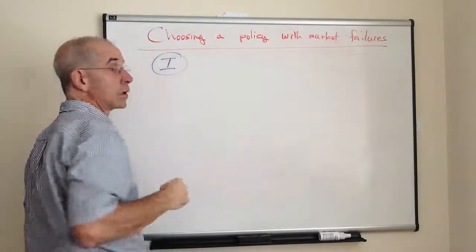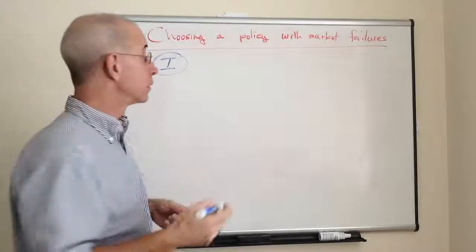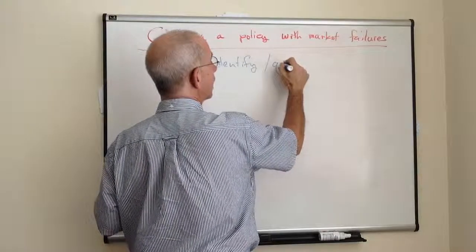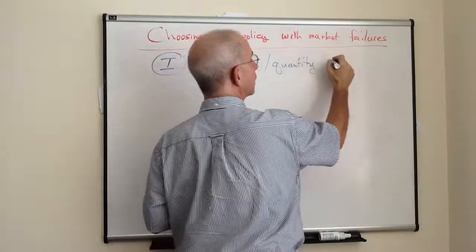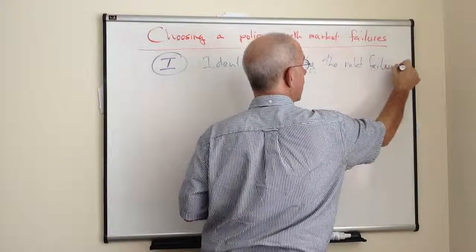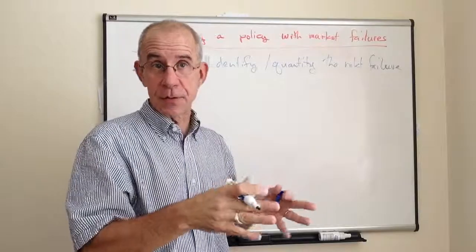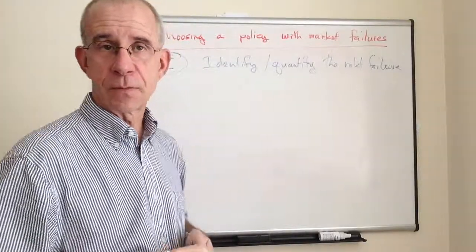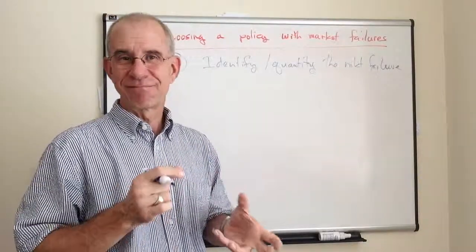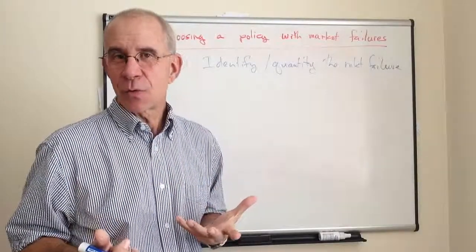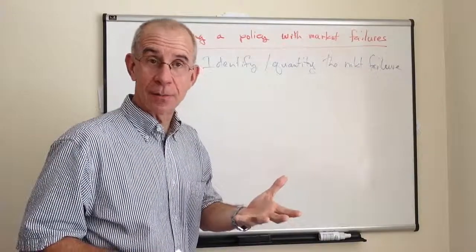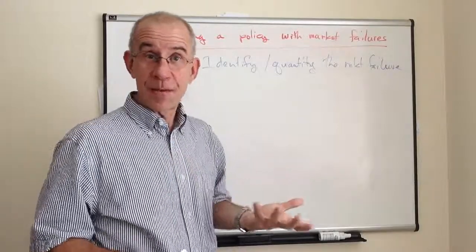The first thing that you want to do is to identify what the actual problem is and to quantify that market failure. Often, the first part of this is a lot easier than the second part. You know that there's pollution or some sort of difficulty that the market's not taking into account, but trying to measure the exact amount of that is a trickier thing to do. But in order to identify a solution, you not only have to know what the problem is, but how big of a problem it is.